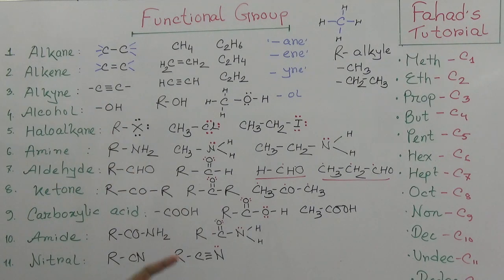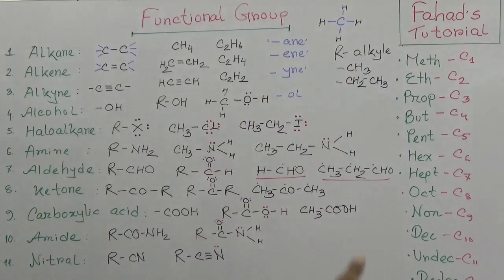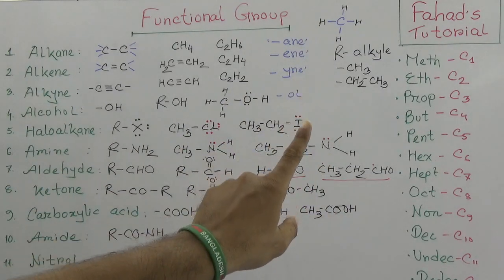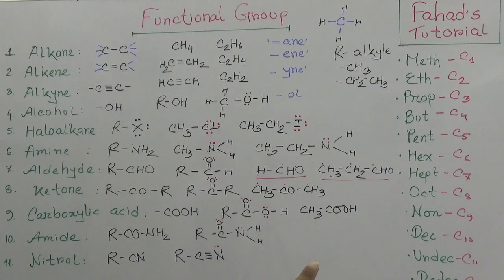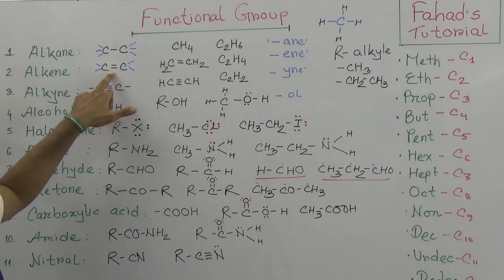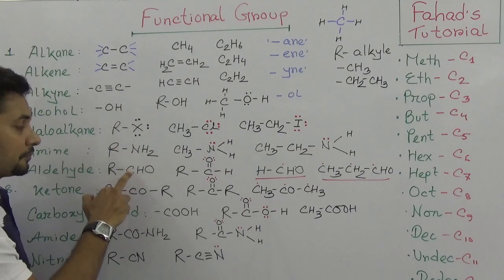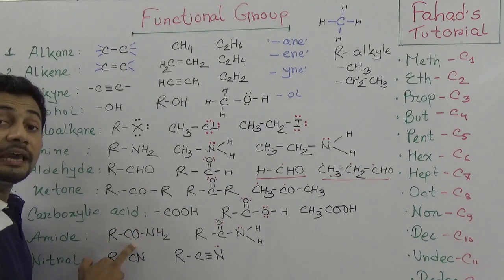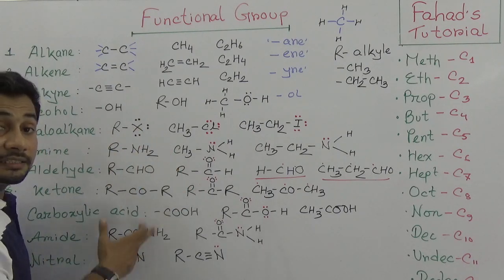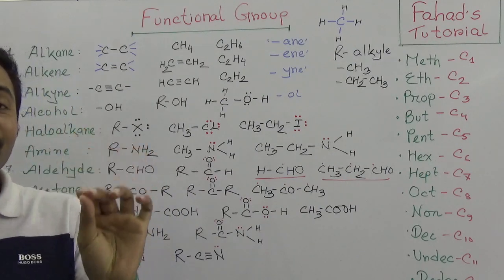So in this short tutorial we have covered all the main functional groups. You can see the number of carbons from one to twelve: meth-, eth-, prop-, but-, pent-, hex-, hept-, oct-, non-, dec-, undec-, dodec-. Carbon-carbon single bond is alkane, double bond is alkene, triple bond is alkyne, then alcohol (-OH), haloalkane (halogen), amine (-NH2), aldehyde (-CHO), ketone (-CO-), fatty acid (-COOH), amide (-CONH2), and nitrile (-CN).